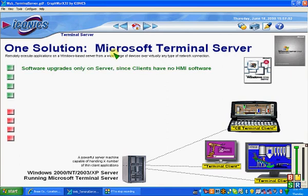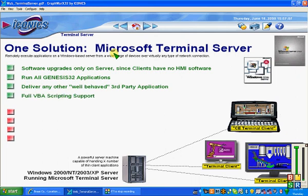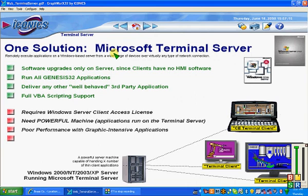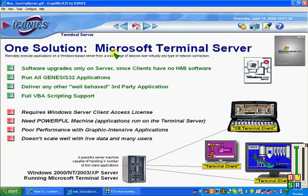With Microsoft Terminal Server, software upgrades only need to happen on the server, which is a nice advantage. However, all Genesis applications run on the server and each ThinkClient is running on the server using Windows Terminal Server, so that is going to require more hardware. It can deliver third-party applications as ActiveX controls within Genesis 32, since Genesis 32 is both an ActiveX control and an ActiveX container. Full VBA scripting requires a Windows Server client access license, and you need a powerful machine to run all these applications. Performance in graphic-intensive applications is generally poor and not very scalable.